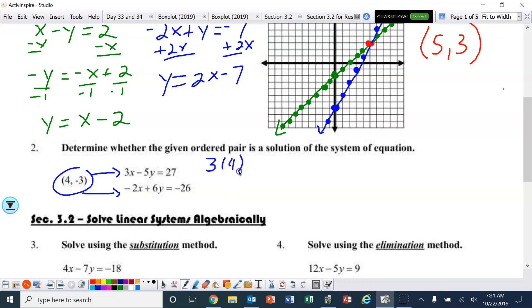So, 3 times 4 minus 5 times negative 3. And we want to see, does that equal 27? Well, let's see. This is 12. This becomes plus 15 because a minus times a negative is a plus. And 12 plus 15 is 27. So, yes, that works for that equation.